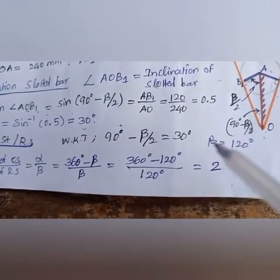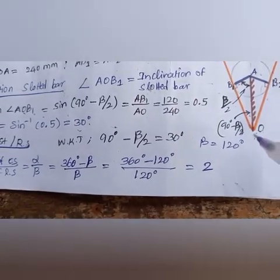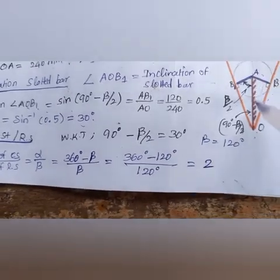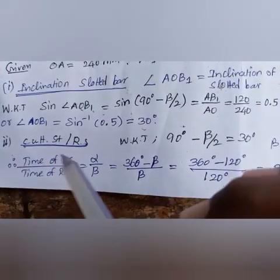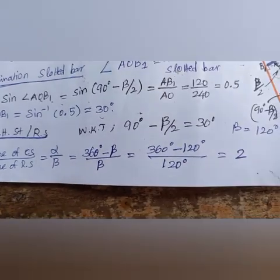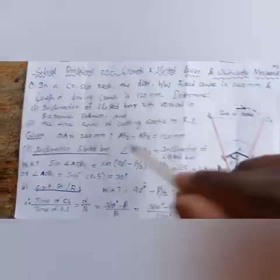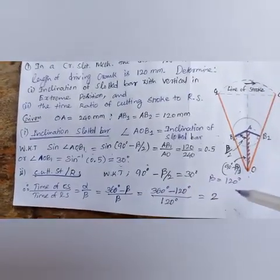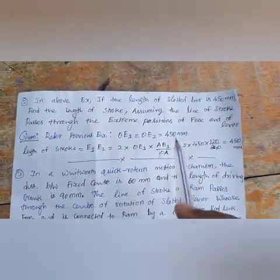From 90° − β/2 = 30°, we get β = 120°. The ratio of time of cutting stroke to return stroke = α/β = (360° − β)/β = (360° − 120°)/120° = 240/120 = 2. So the inclination is 30° and the ratio of cutting stroke to return stroke is 2.